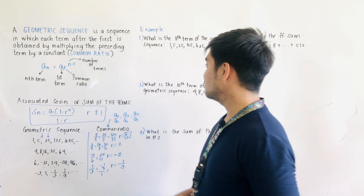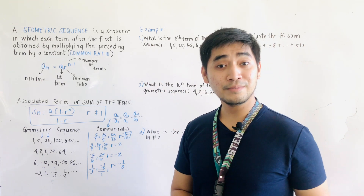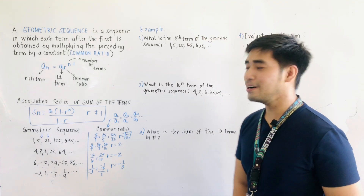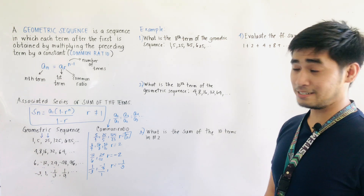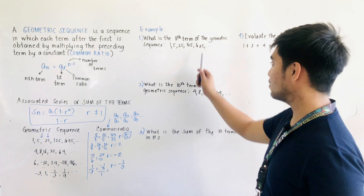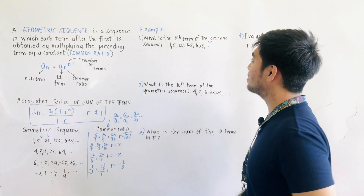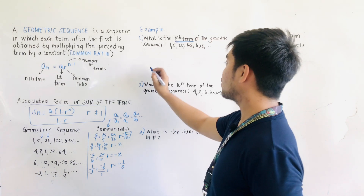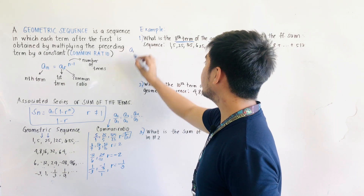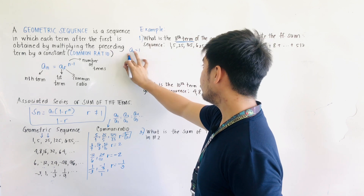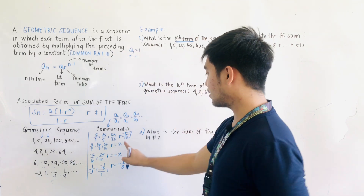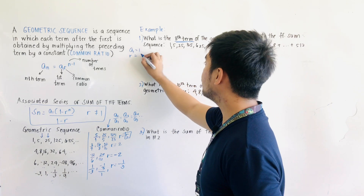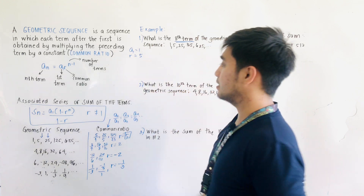Let us now move on to solving different terms in a geometric sequence. Example 1: What is the 8th term of the geometric sequence 1, 5, 25, 125, 625? We write the given: A1 is 1, R is 5 over 1 or 25 over 5, therefore R equals 5, and N equals 8.